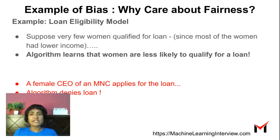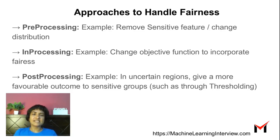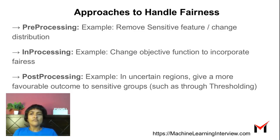How do we actually make our models fair? There are many approaches to handling fairness. Some are pre-processing approaches. For example, we remove the sensitive features — in this case, we remove the gender so that the algorithm learns only that lower income people are less eligible and it's not based on gender. Or we could change the distribution so that people who got a loan are equally represented from both groups or genders.